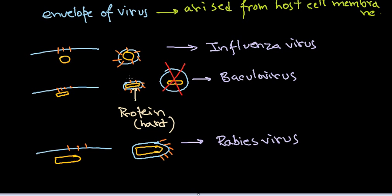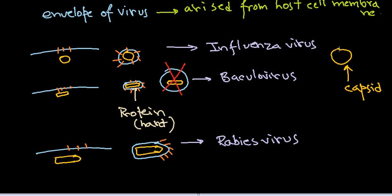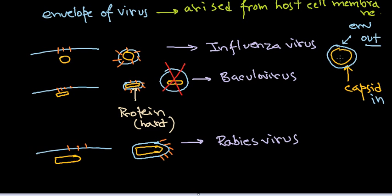There are certain viruses that have their lipid component inside the capsid. In most cases, the arrangement is: capsid inside and the membrane or envelope outside. So the capsid is in the interior, surrounded by the membrane envelope on the outside — that is the actual arrangement in all these types of viruses.